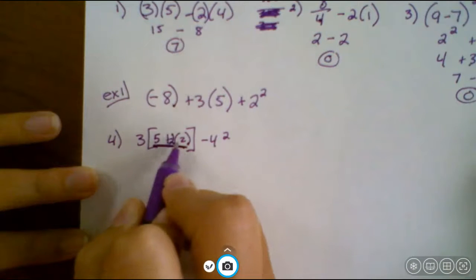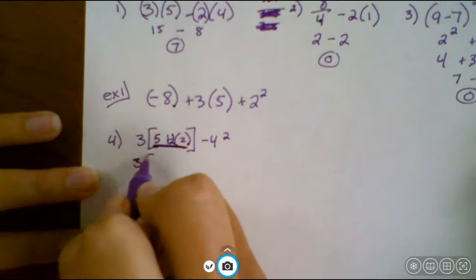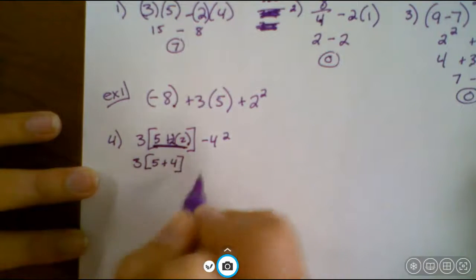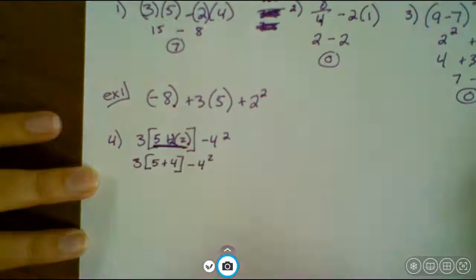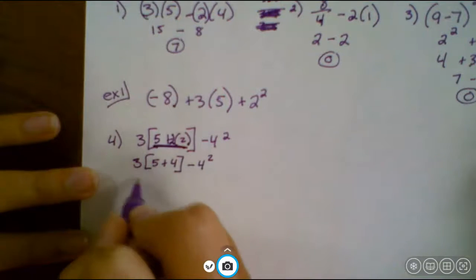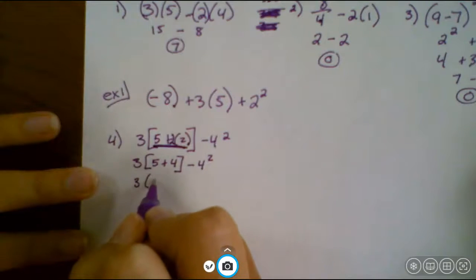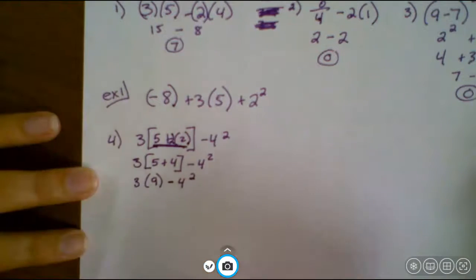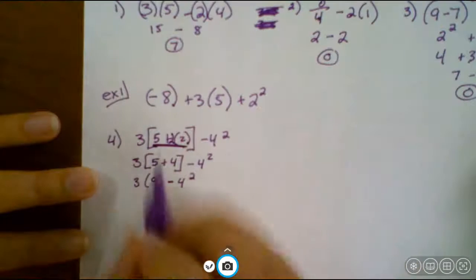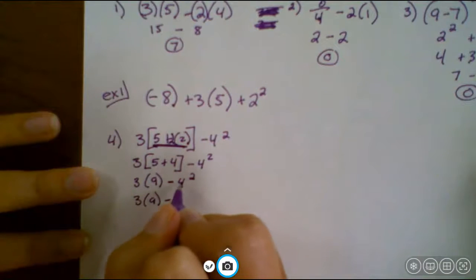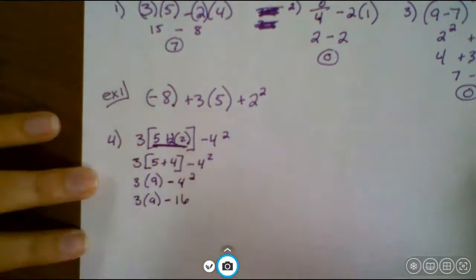Within that, we have multiplication, which is what we need to do first. So I'm going to bring that five down, plus two times two is four, and then bring that four squared down. I still have those parentheses. So five plus four would be nine. Okay, now I did my parentheses. Now I'm on my exponents. So we have three times nine minus four squared, or four times four is 16. Remember, it's not four times two. It's four times four.